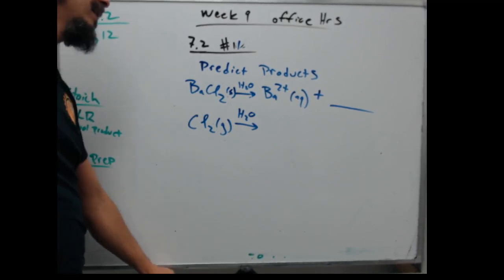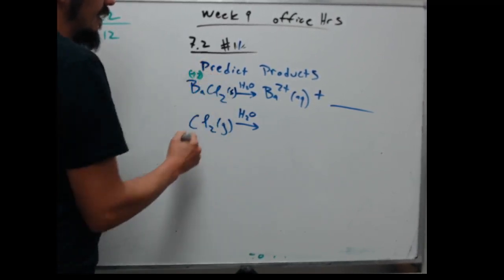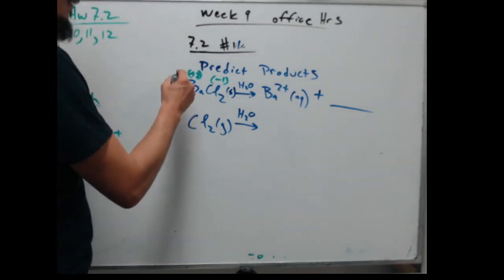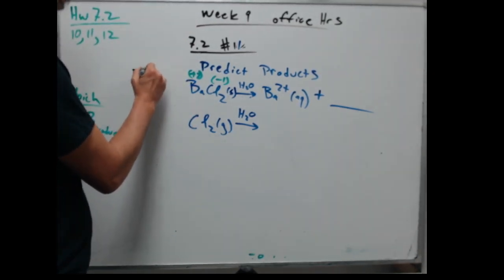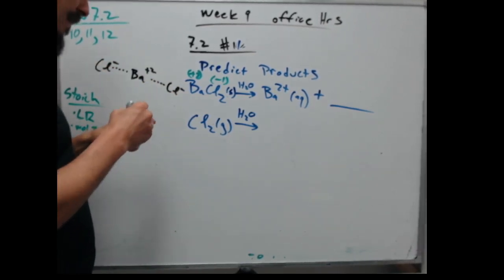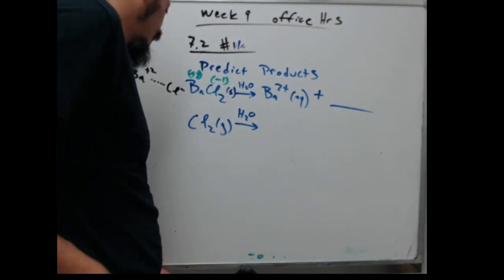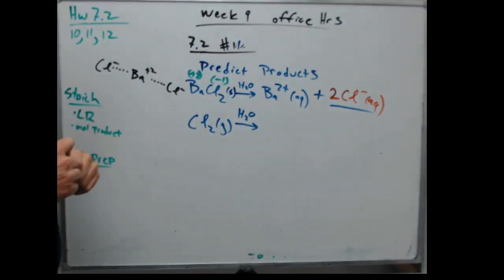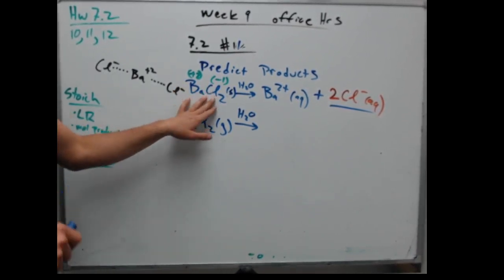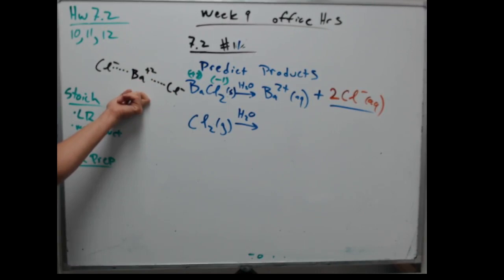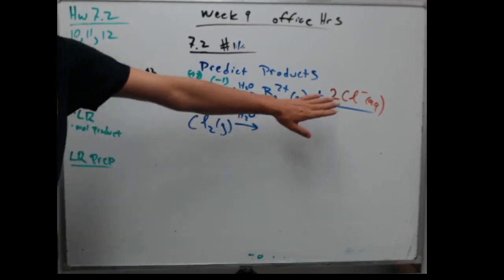If I draw a picture of barium chloride, I'd draw a Ba²⁺ ionically bonded to 2 Cl⁻ ions. So when I dissolve this in water, my predicted products are Ba²⁺ aqueous plus 2 Cl⁻ aqueous. That comes from identifying ionic bonds and recognizing this isn't Cl2 gas attached to barium — it's 2 chloride ions attached to a barium ion.